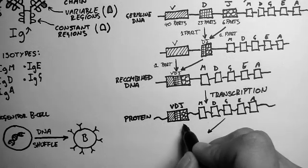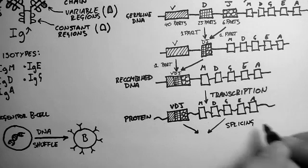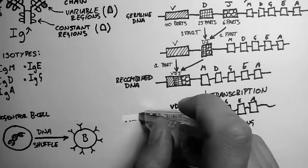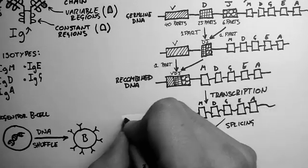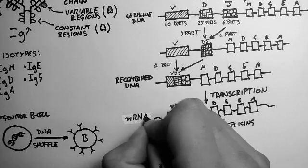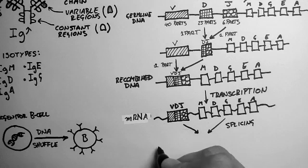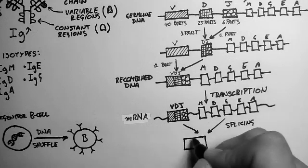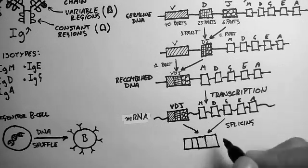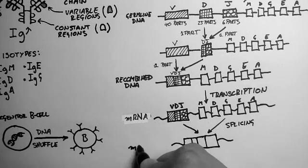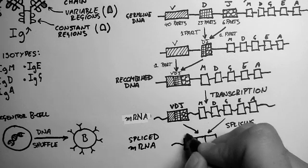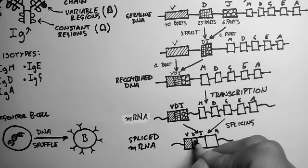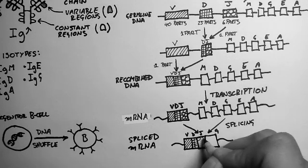Now one of these regions, for example, let's use the G region, gets kept while the others get spliced away. And this gives us a new spliced version of the mRNA, with the V-D and J region sitting right next to the constant region. So this is a V-D, J, and a G mRNA.